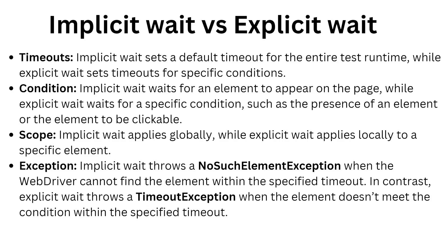Explicit wait is not defined globally but for a specific condition. For example, suppose one button is there and after clicking it will take around 20 seconds to display some text. We have defined implicit wait as 10 seconds, so the button is visible under 10 seconds, but the text will be visible after 20 seconds — so our script will fail. What we do is define an explicit wait of 20 seconds for that specific element. So implicit wait is global and explicit wait is specific.